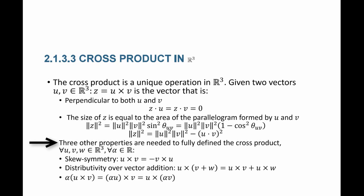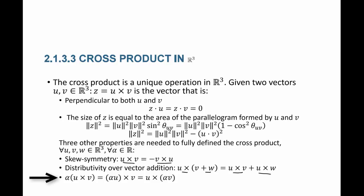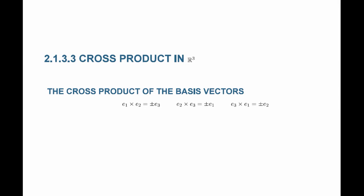There are three additional properties of the cross product. It's skew symmetric: u cross v equals negative v cross u. The cross product is distributive over vector addition: u cross (v plus w) equals u cross v plus u cross w. And if I have a scalar multiplier alpha, alpha times (u cross v) equals (alpha u) cross v, or also equals u cross (alpha v). The cross product can also be used to show that e1 cross e2 is either equal to positive e3 or negative e3, and so on.